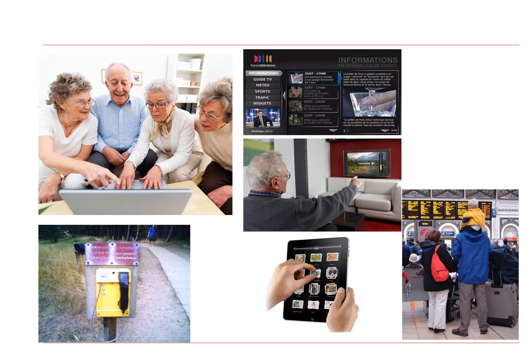If you design computer screens for information — such as information screens in a building or an open space — the interaction modes are very important. The sorts of things you're going to have to consider include the use of hands for touch screens or the use of arms and fingers for pointing, whether dialogue is a possibility, whether people can hear it, and the sizes of fonts and the use of colour in your screens.